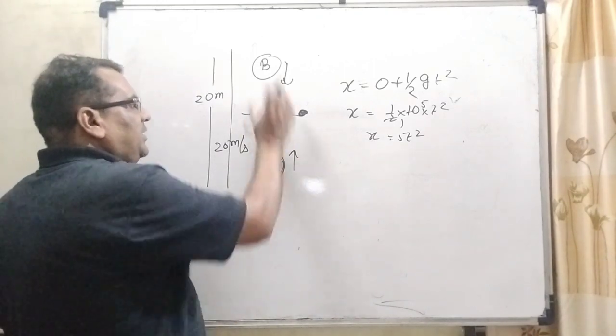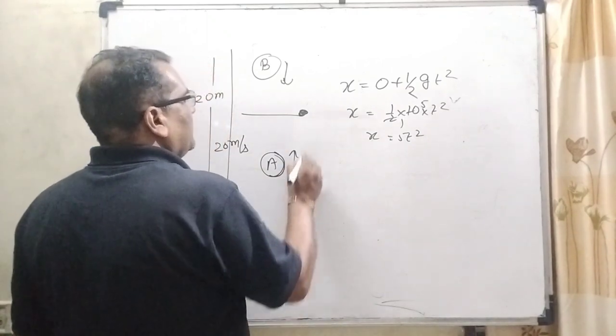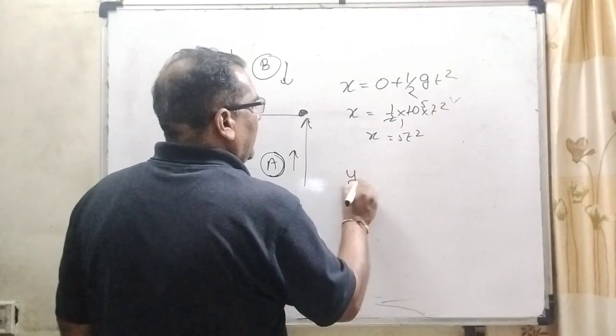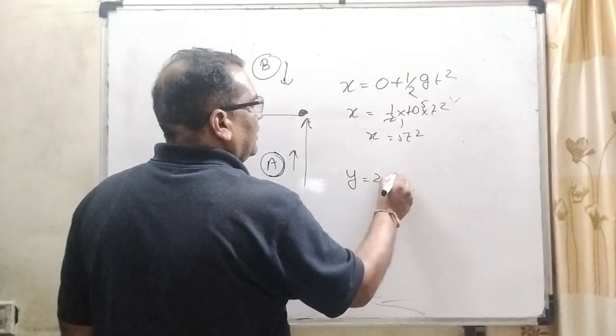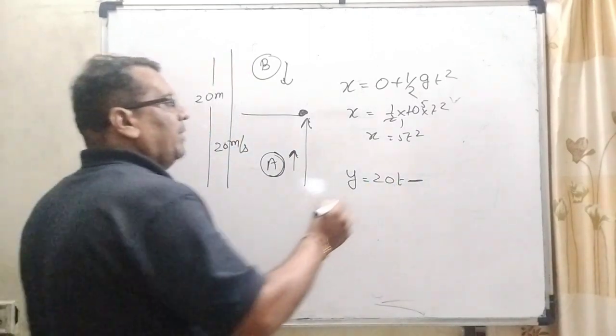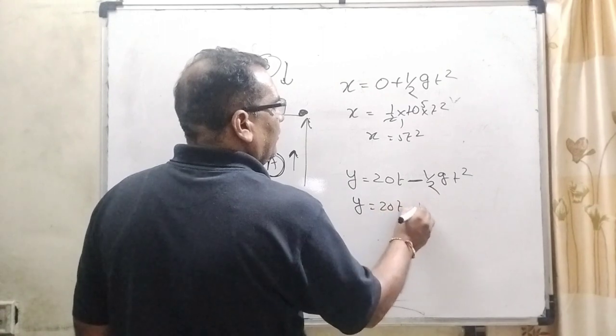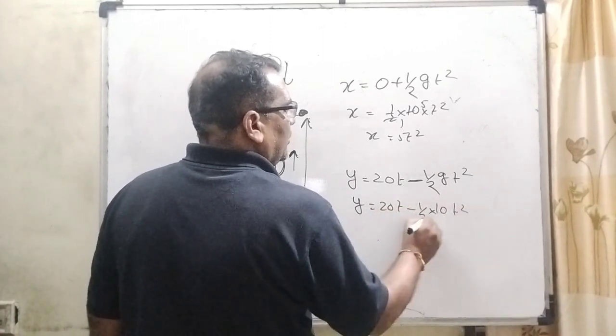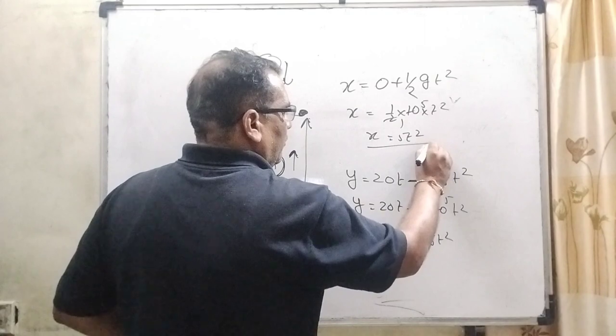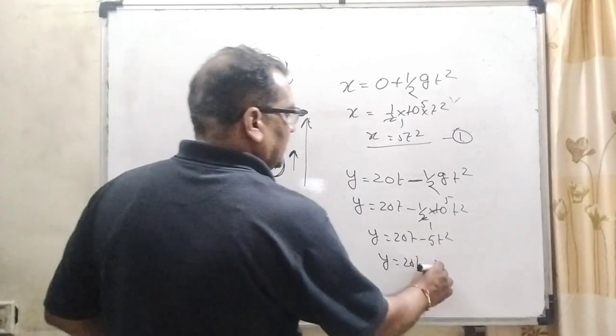And at the same moment, this object is thrown in the vertical direction. That time, we are using the distance. Let us suppose the distance is covered by y. So we are using y equal to initial speed that is 20 t and it is thrown against gravity. So 1 by 2 g t square. So y equal to 20 t minus 5 t square. What is 5 t square? We have already found out 5 t square can be written as x.